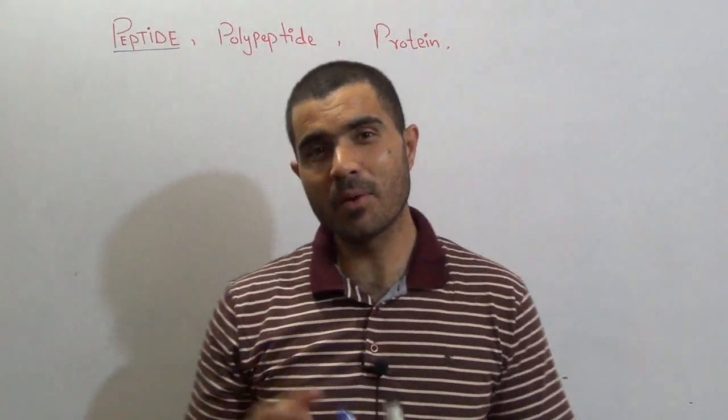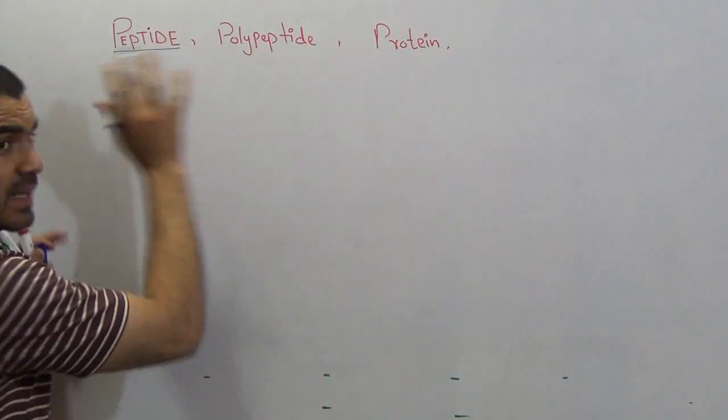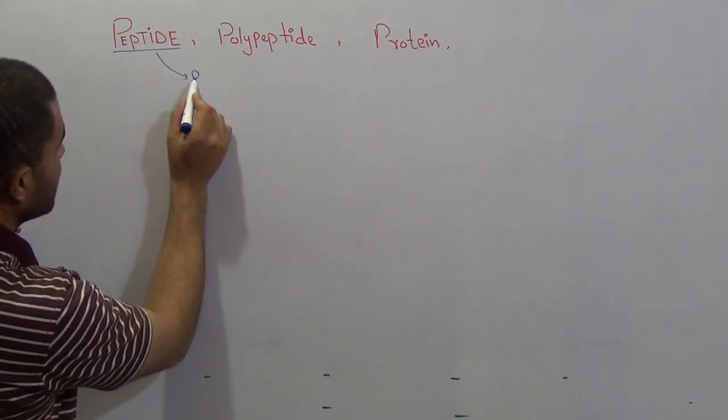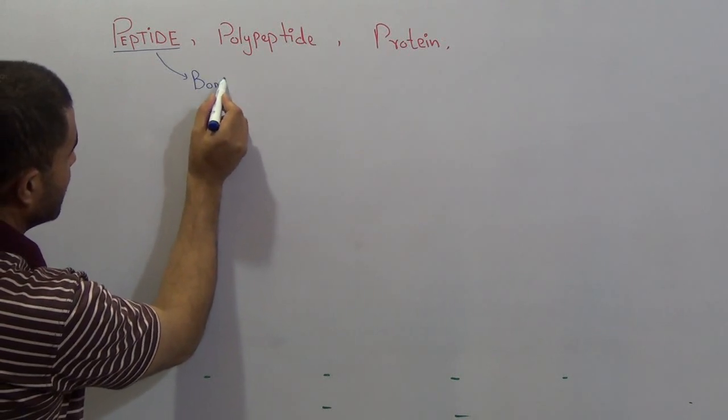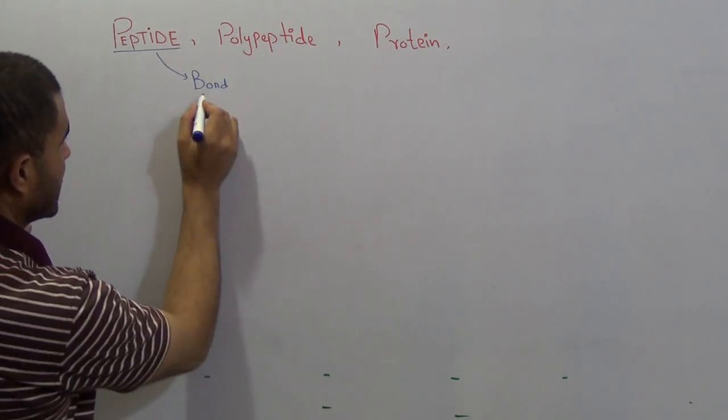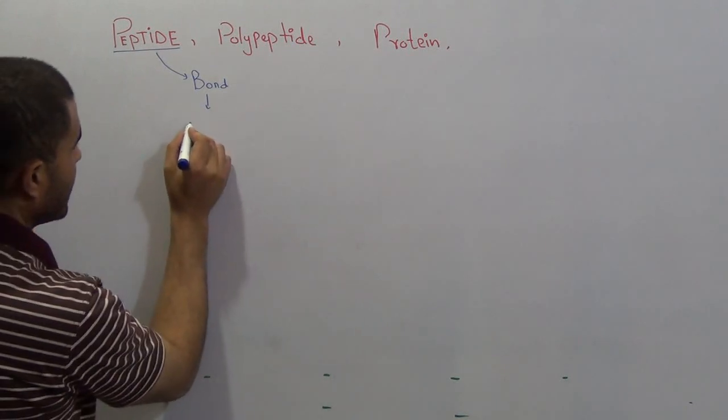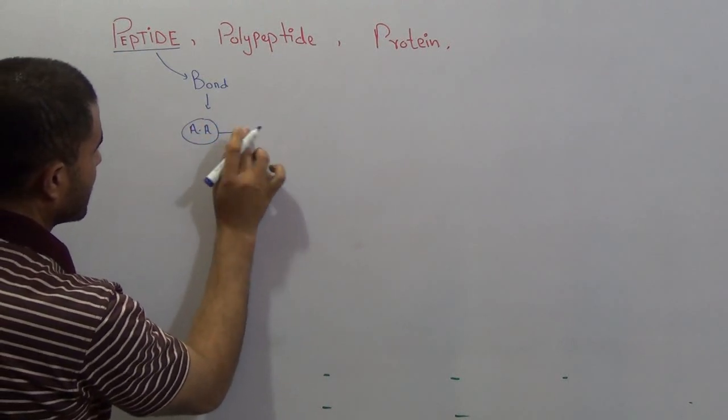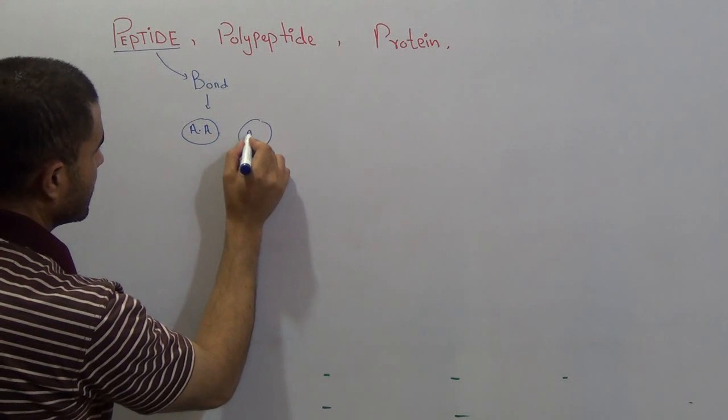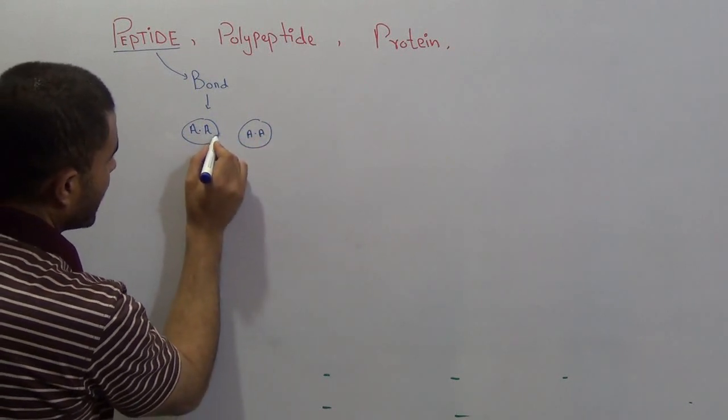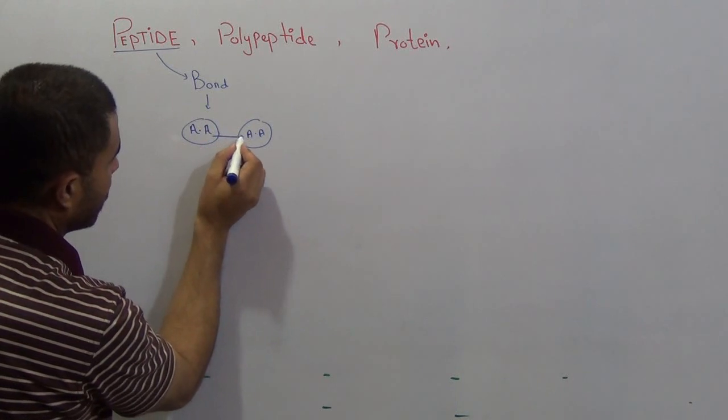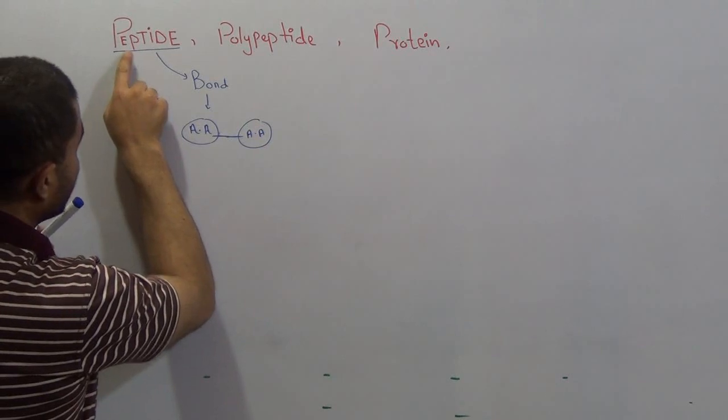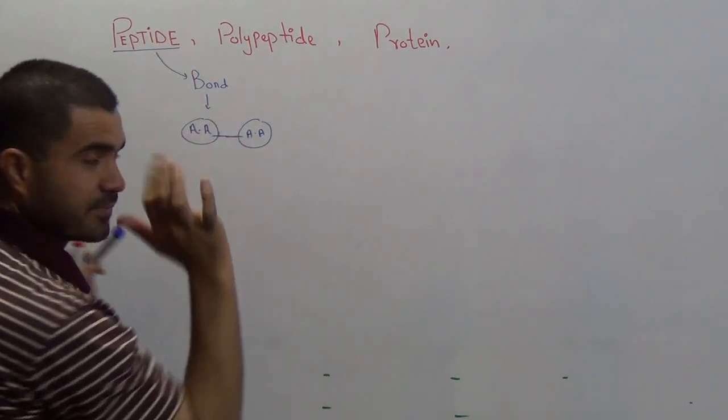The first is peptide. Peptide can be studied in two ways. Number one, either it can be studied as if we attach one term that is bond - peptide bond. When you have one amino acid and there is another amino acid, two amino acids, the bond that is formed between these two amino acids, that bond is called as peptide bond.